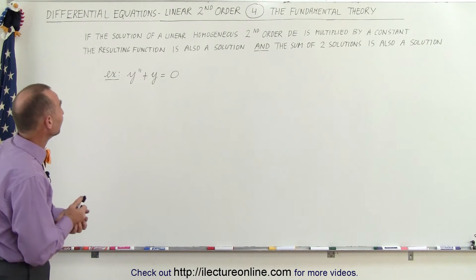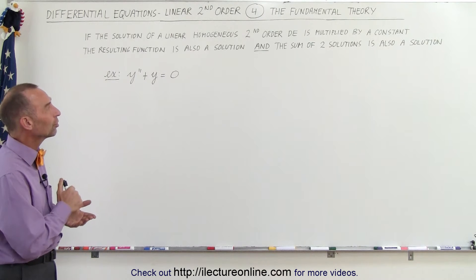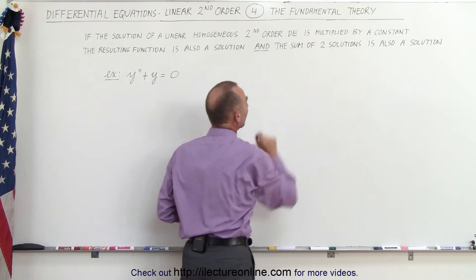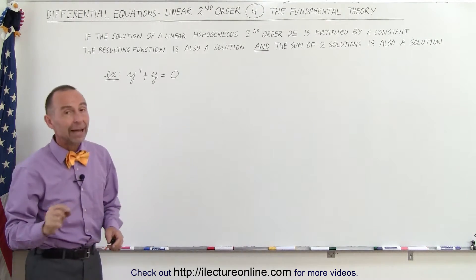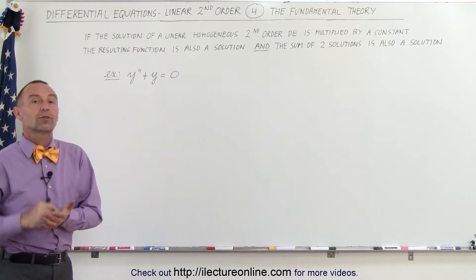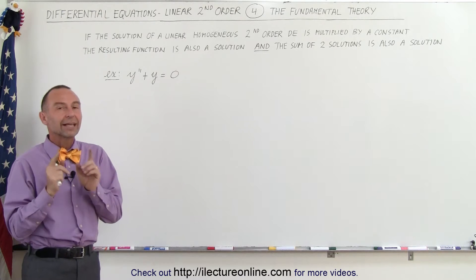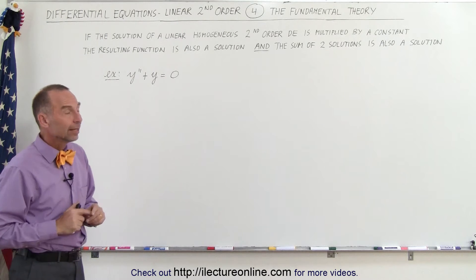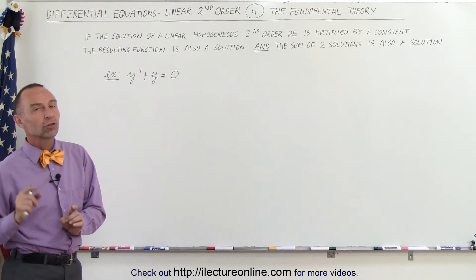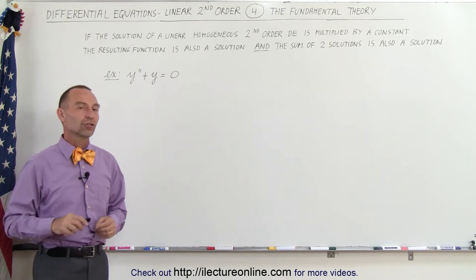Let's read it. It says: if the solution of a linear homogeneous second-order differential equation — we use DE to represent differential equation — is multiplied by a constant, then the resulting function is also a solution. And if we take the sum of two solutions, that will also be a solution to a second-order homogeneous differential equation.